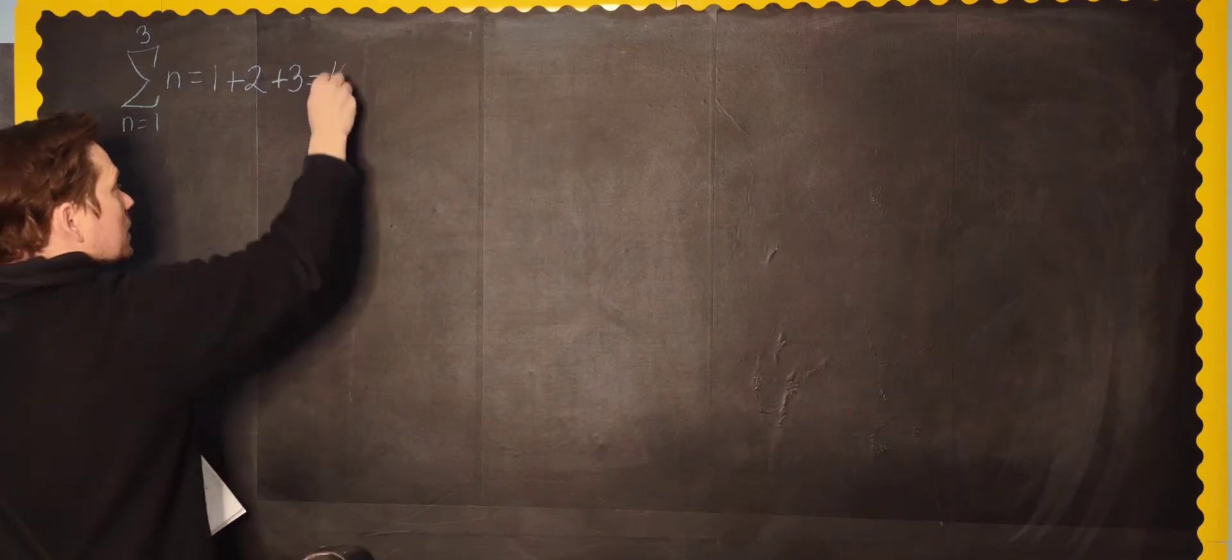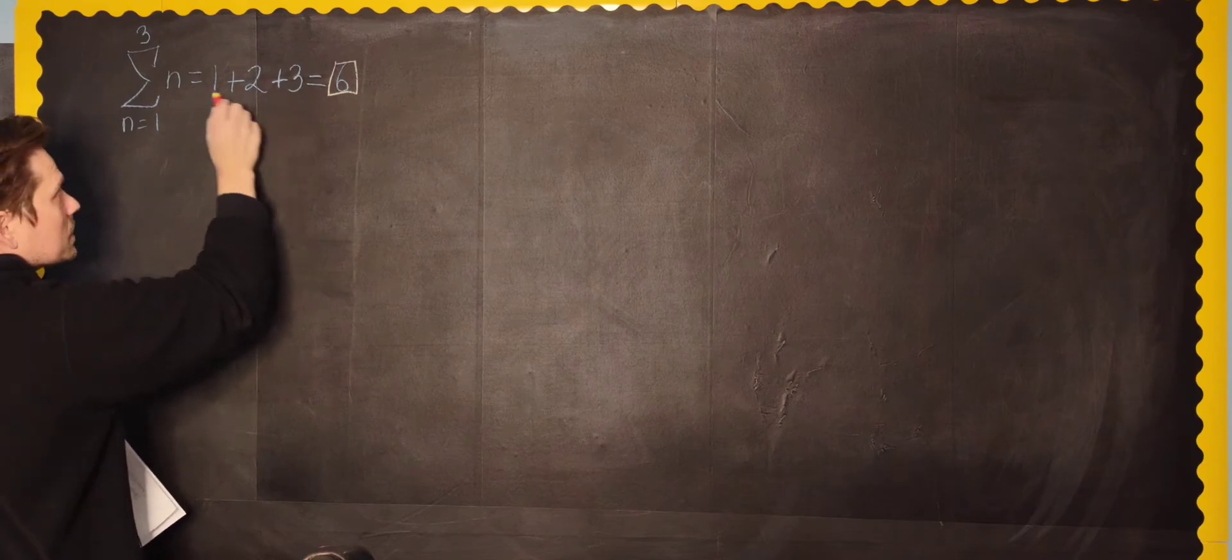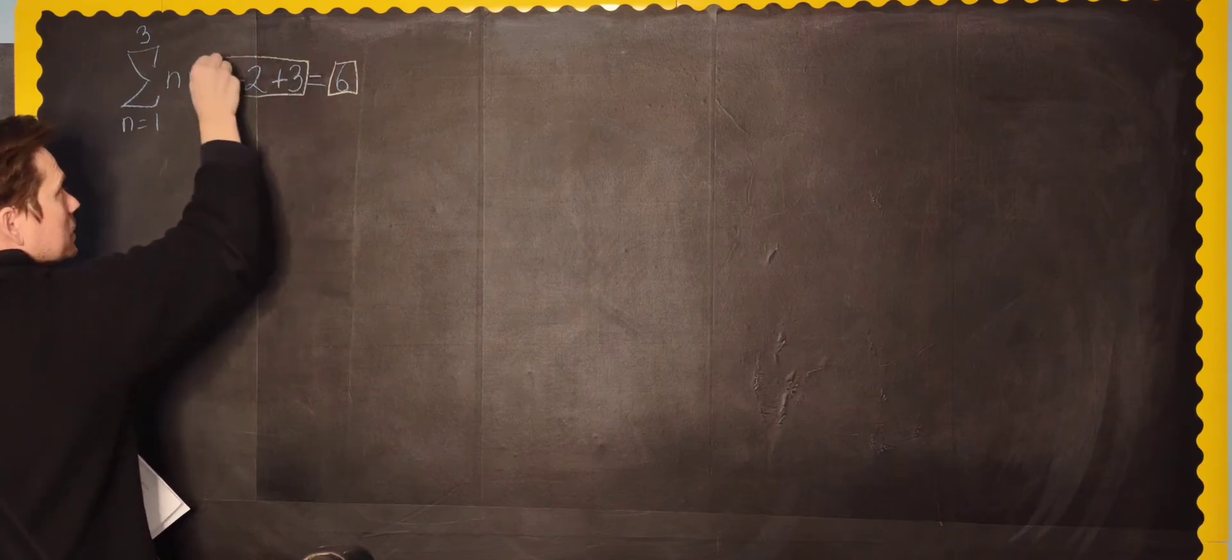So now when you write this out, what does this mean? It means n is at first 1, then you've got to go up to 3, the assumption is you go through the intermediate value, so you don't just put 1 plus 3, you've got to put 1 plus 2 plus 3.